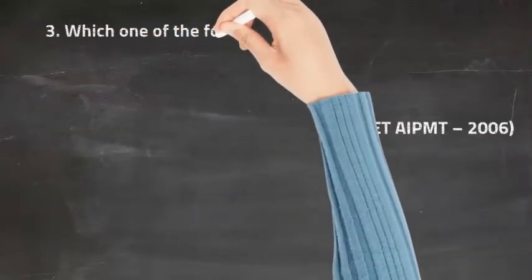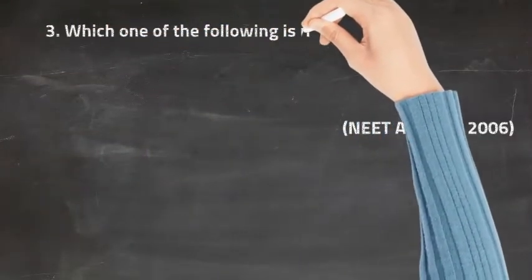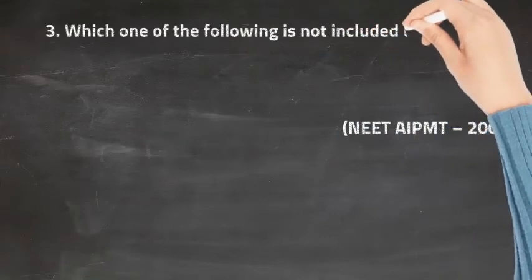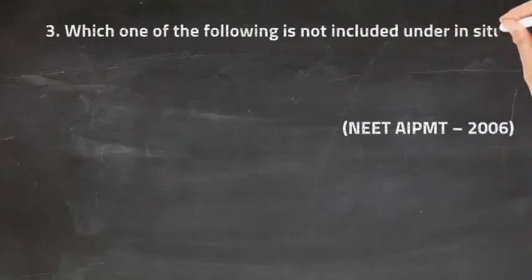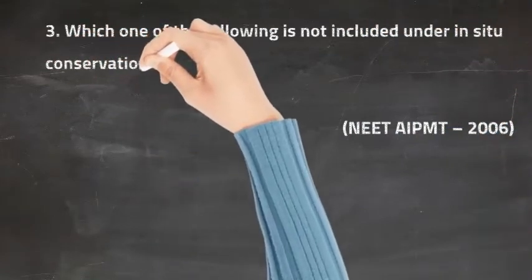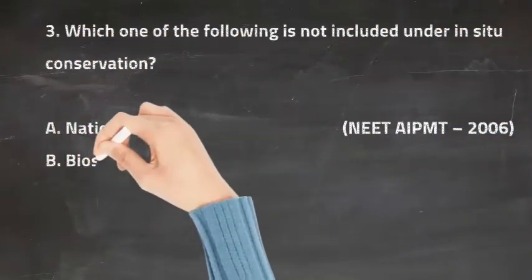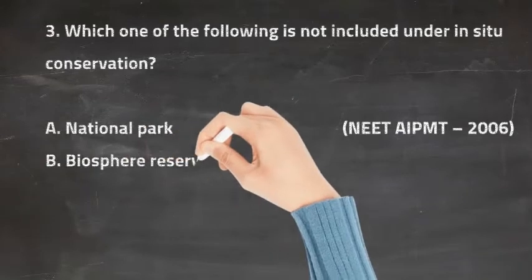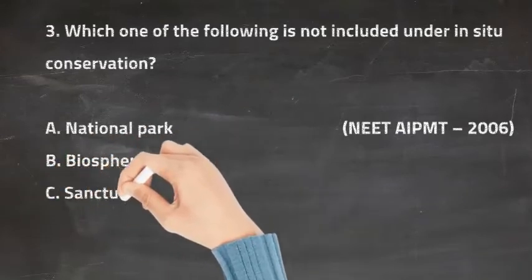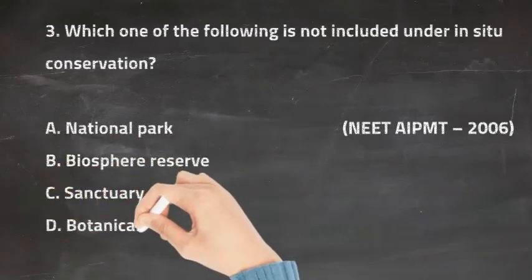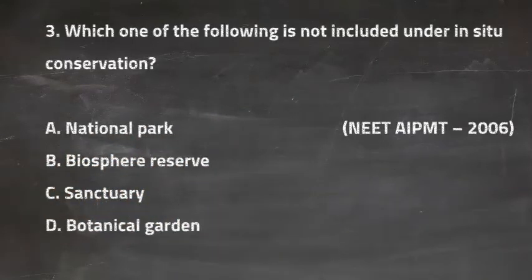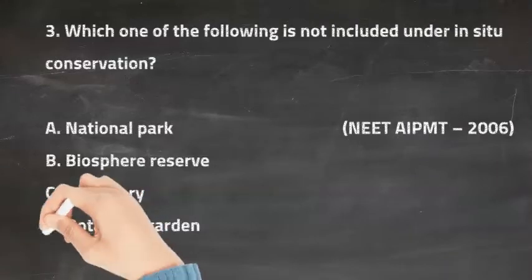Q3: Which one of the following is not included under in-situ conservation? Option A is National Park, Option B is Biosphere Reserve, Option C is Sanctuary, and Option D is Botanical Garden. The right answer is Option D, Botanical Garden.